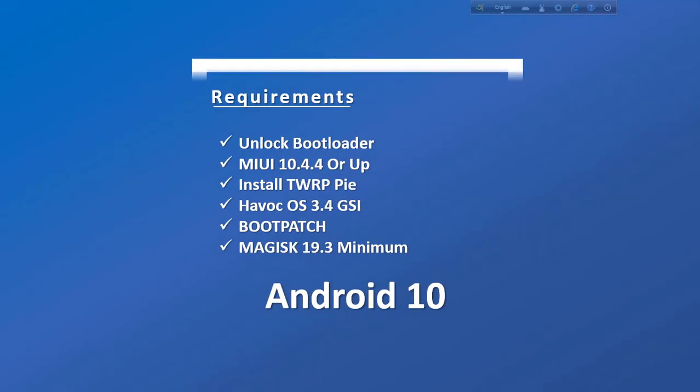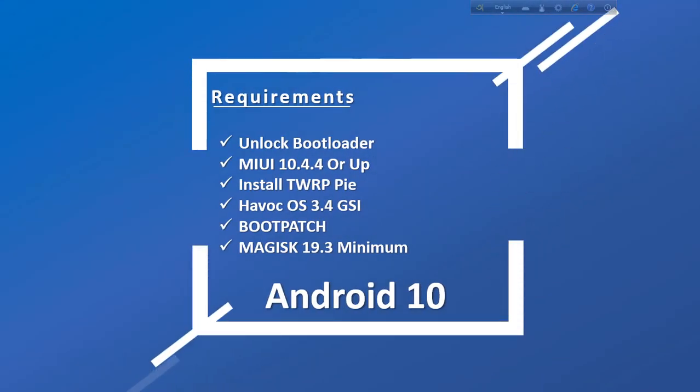Key requirements: your Xiaomi Redmi 6 phone must have an unlocked bootloader. Your MIUI version should be 10.4.4 or MIUI 11. The phone needs to be on Android 9 base, and you need TWRP installed. Then download HavocOS 3.4 GSI — the download link is in the video description. Check your MIUI version; for example, 10.4.4, MIUI 11, or MIUI 11.7 — but not Oreo-based versions.